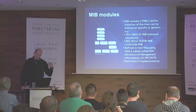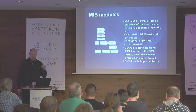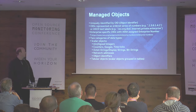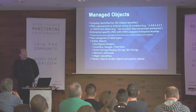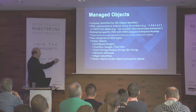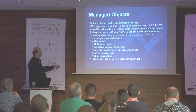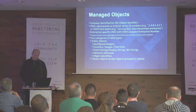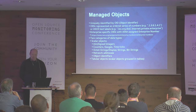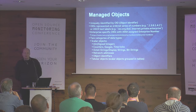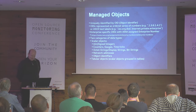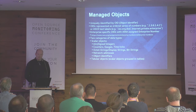What is very important: MIB modules themselves only define things — they don't implement things. Every managed object is uniquely identified by a so-called OID, an Object Identifier, which can be either a series of numbers or ASCII text labels. For example: .iso.org.dod.internet.private.enterprise and then something at the end. There can be enterprise-specific OIDs. The IANA — the Internet Assigned Numbers Authority — assigns so-called enterprise numbers.